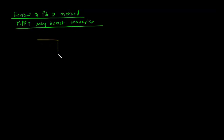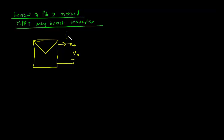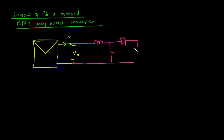Generally in this system we have a solar panel. In the last part I showed you how to take out the output terminal from the solar panel. This output terminal will go to the boost converter, and at the output of the boost converter we have a battery. Let us say the voltage of the battery is V_BAT.